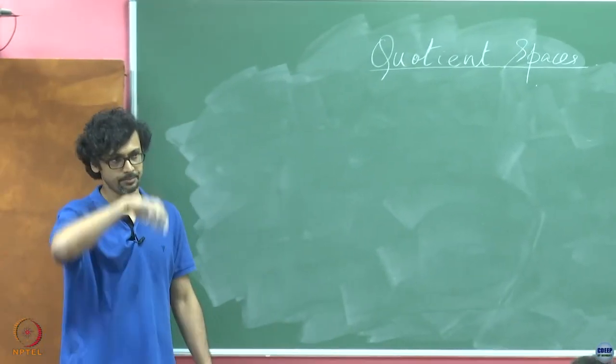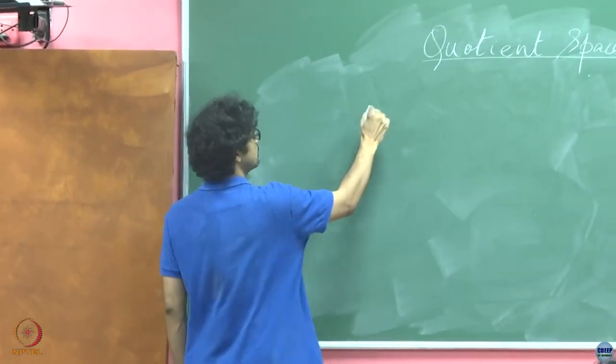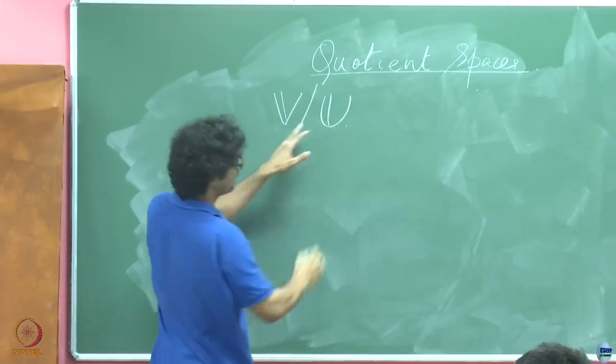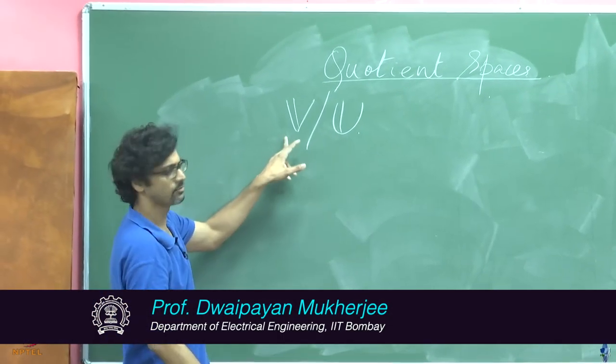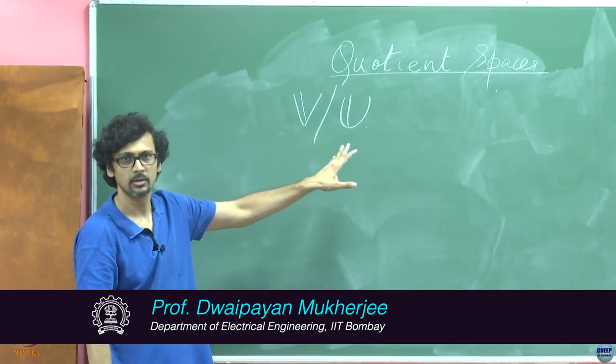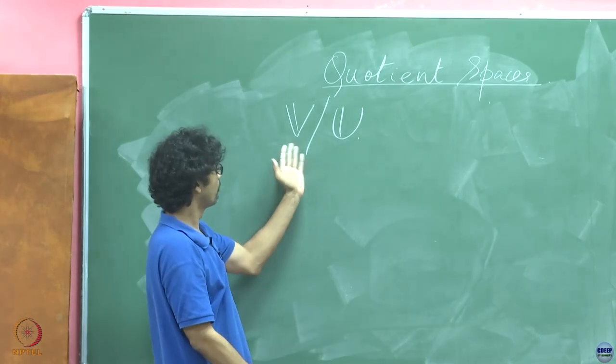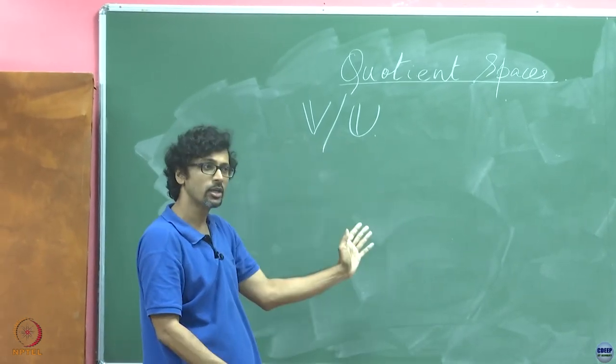So, when we take 2 objects in this quotient space, say V quotiented by U, I am not repeating all that I have written like U is a subspace of V and so on. By now, I expect you to be familiar with that already. So now, when we take 2 objects in this, what are we talking about? We are talking about 2 sets.